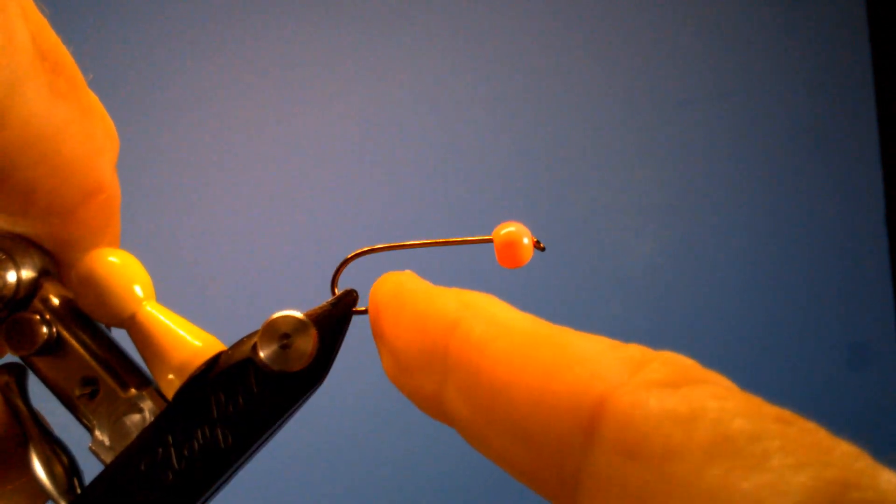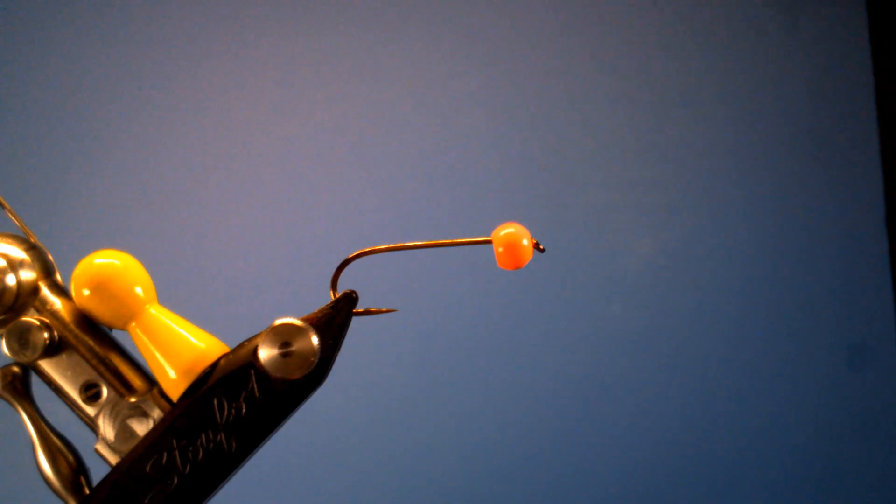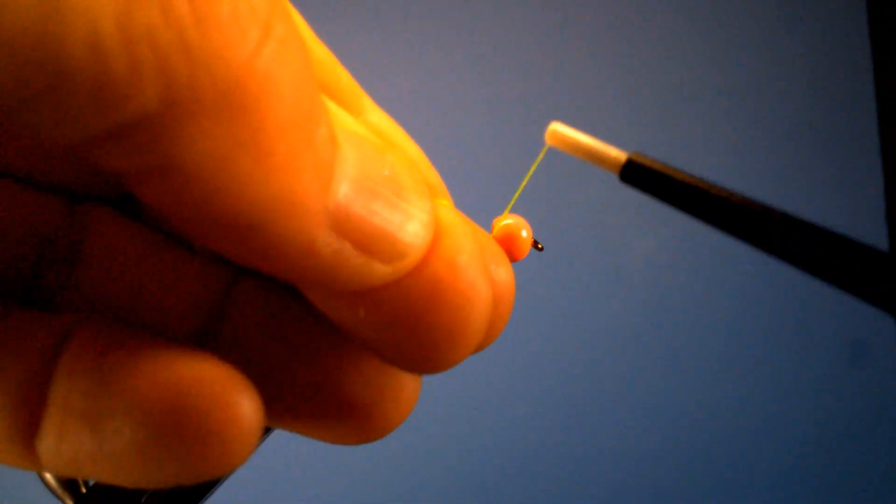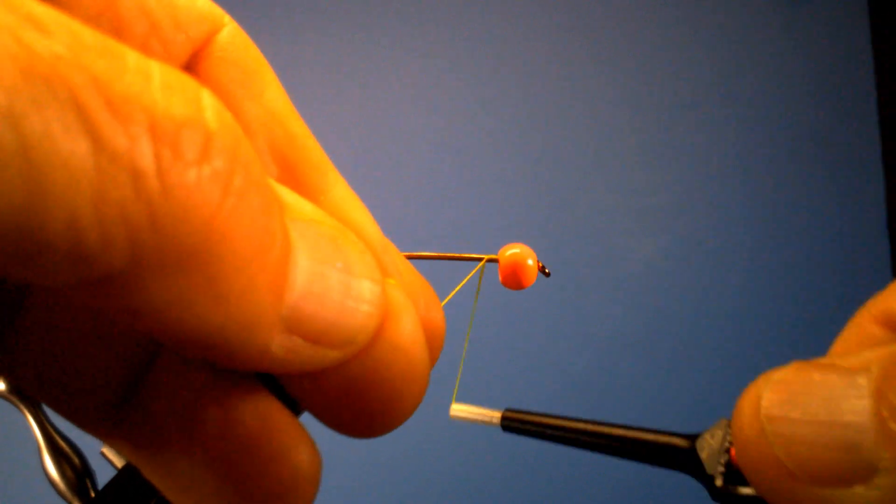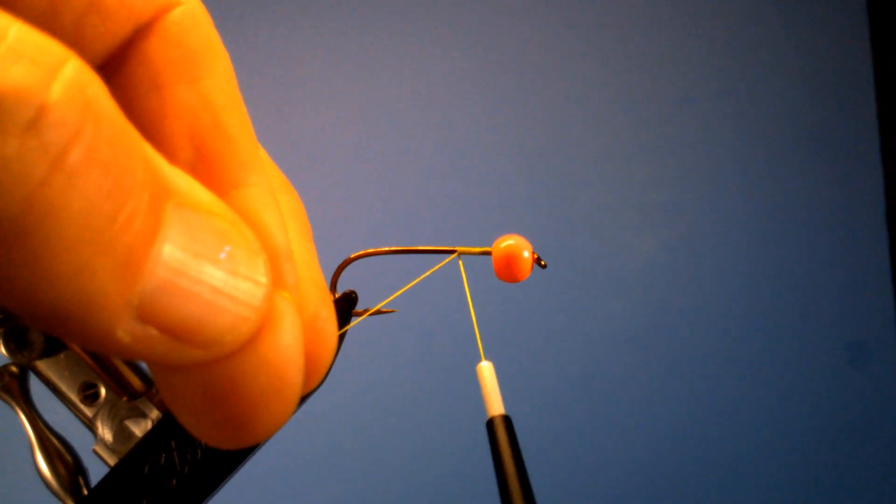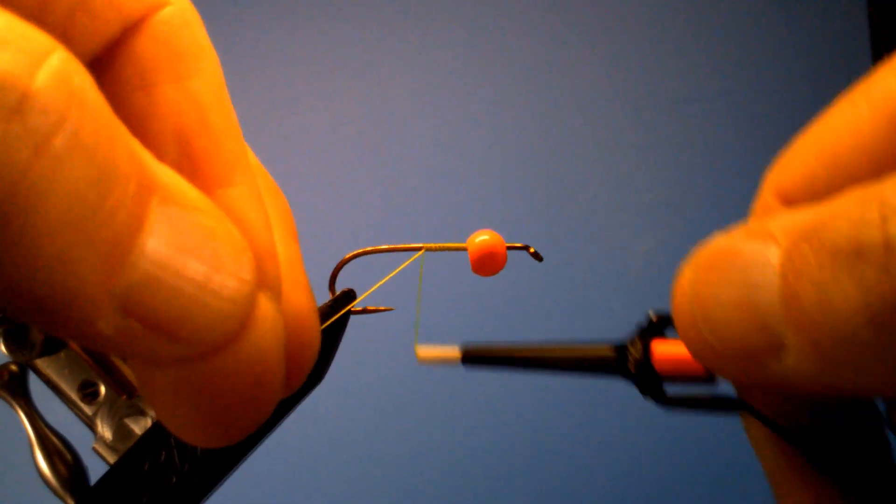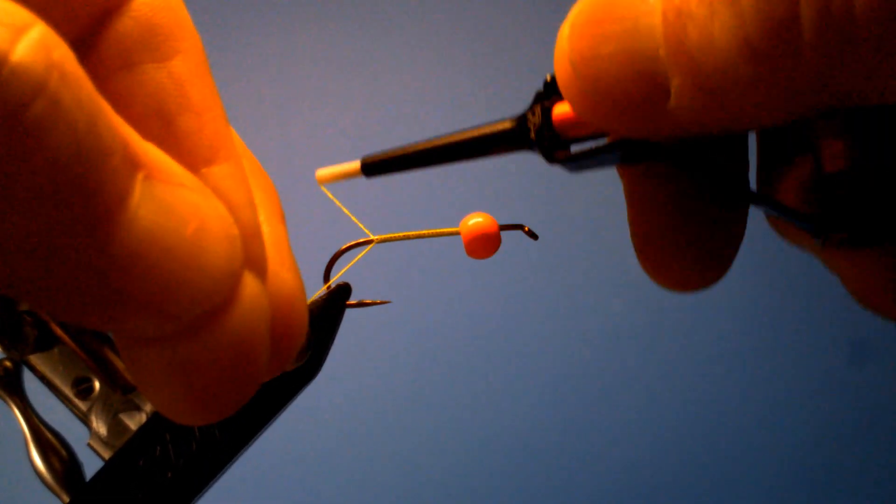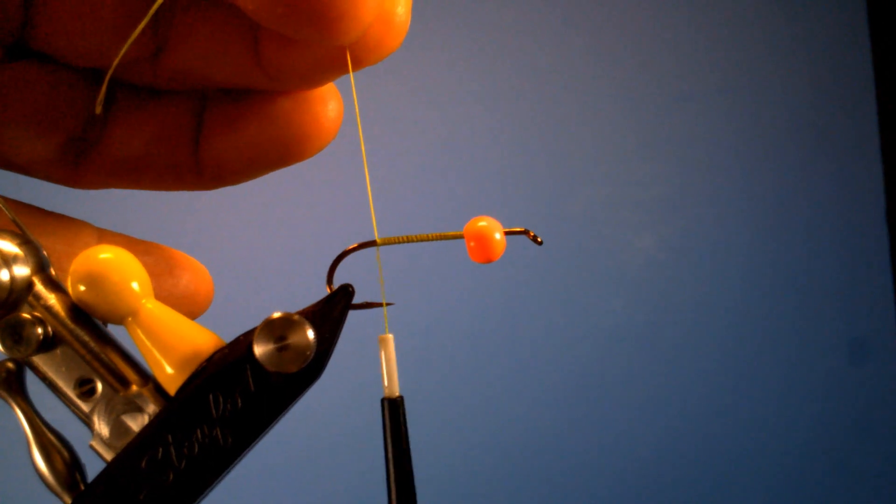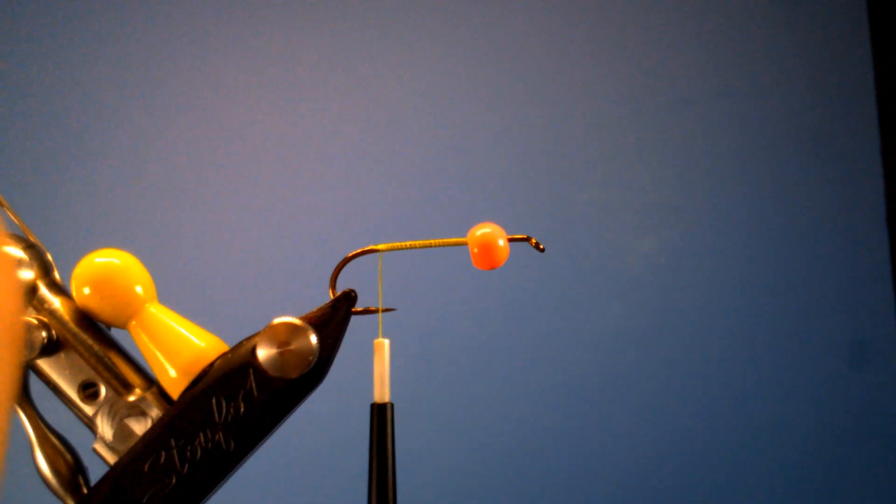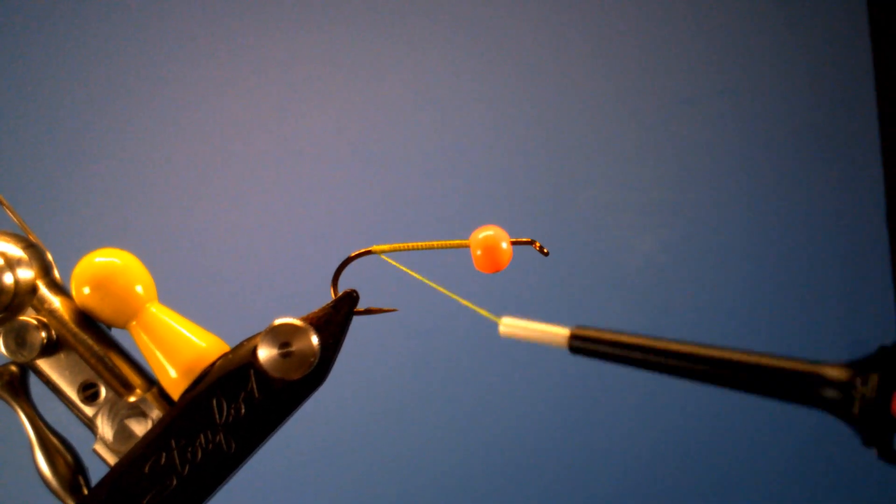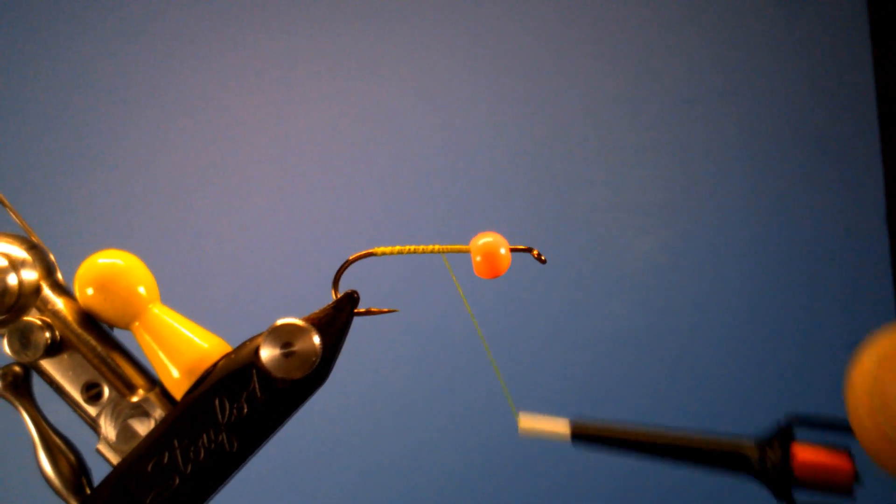I've already debarbed the hook. The thread I'm going to use is 210 chartreuse. Whatever color you decide to tie it in for the area that you're fishing, chartreuse is a good color for the Charleston area. Just match your thread to the color of the body. If you didn't want to use a pink bead, you could pick your own. I'm going to put a layer of thread down and move it back up to the top.